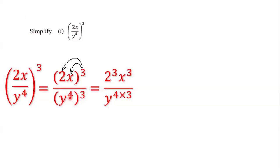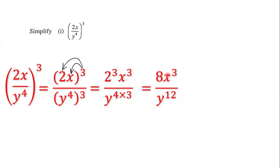We have y to the fourth power raised to the third power. To simplify that, we multiply the two exponents: y to the power of 4 times 3. Now, 2 to the third power is 2 times 2 times 2, which gives us 8, and we have x to the third power. And y to the power of 4 times 3 is y to the power of 12.